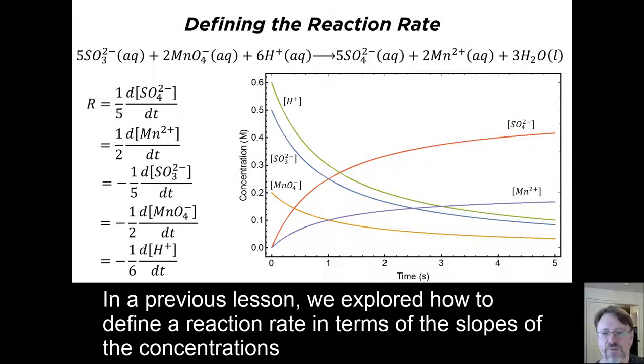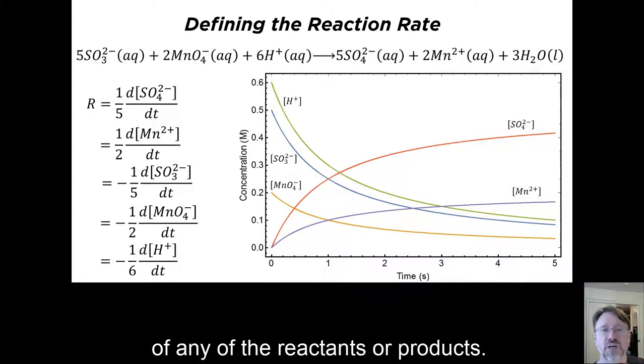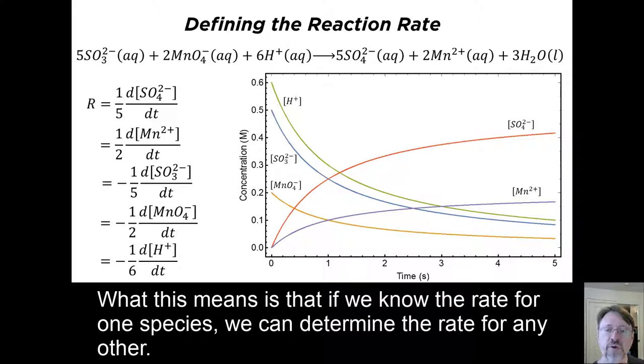In a previous lesson, we explored how to define a reaction rate in terms of the slopes of the concentrations of any of the reactants or products. What this means is that if we know the rate of one species, we can determine the rate of any other.